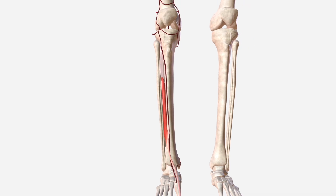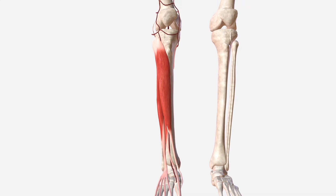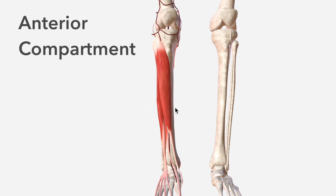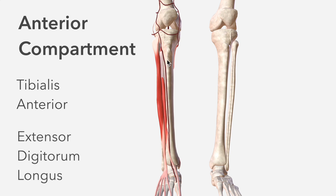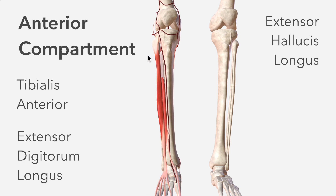The anterior tibial artery supplies all the muscles of the anterior compartment. They are tibialis anterior, and lying deep to this is the anterior tibial artery. We then have extensor digitorum longus, extensor hallucis longus, and the fourth and last muscle of the anterior compartment is fibularis tertius.